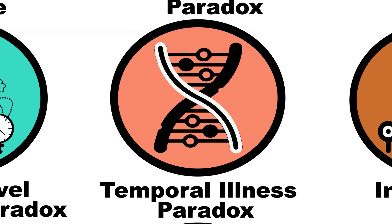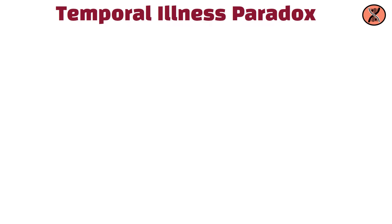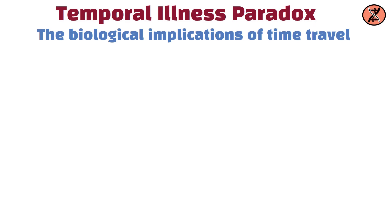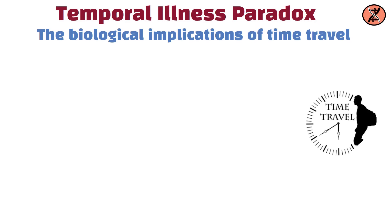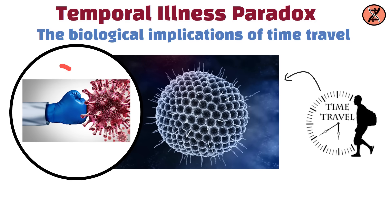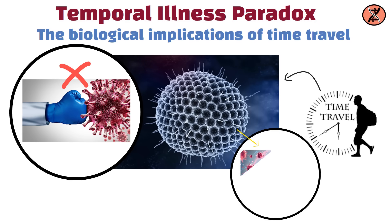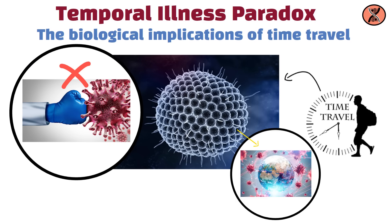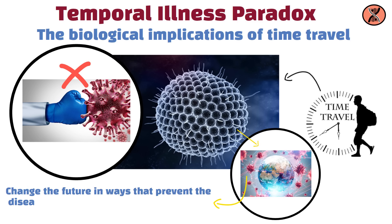The temporal illness paradox considers the biological implications of time travel. If a time traveler brings back a disease from the future that humanity hasn't developed immunity to yet, it could cause a pandemic in the past. This pandemic might then change the future in ways that prevent the disease from developing in the first place, creating a paradox.